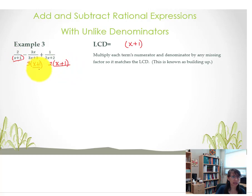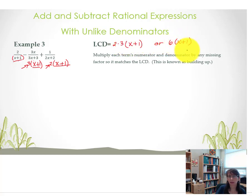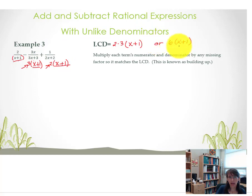All of those quantities are written to the power of 1. The other factors that are unique would be the factor of 3 and the factor of 2. So we include 2 times 3 times the quantity x plus 1 — or 6 times quantity x plus 1 — as the lowest common denominator. Now that we know what the LCD is, every term needs to be rewritten so that the denominator is 6 times the quantity of x plus 1.